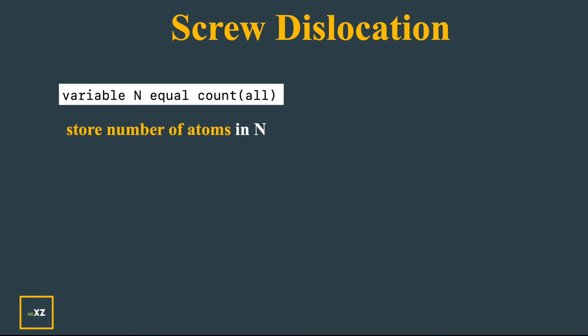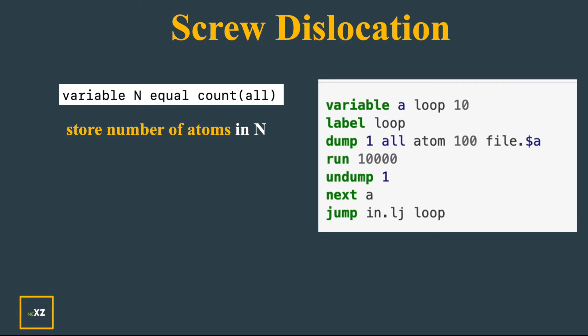I give the variable N which counts all the atoms, so the number of atoms are stored in variable N. Now this is a loop. In a loop you label the loop so that when you use the jump command, you can jump back to the loop. The variable goes from 1 to 10, so loop 10 means variable goes from 1 to 10, and next a means it goes to that next a value.